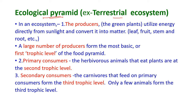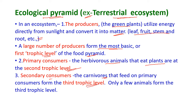In the terrestrial ecosystem as an example: the producers, that is the green plants, utilize energy directly from sunlight and convert it into matter — leaves, fruit, stem, and roots. A large number of producers form the first trophic level. Primary consumers are the herbivorous animals that eat plants at the second trophic level. Secondary consumers are the carnivores that feed on primary consumers, forming the third trophic level, with only a few animals at this level.